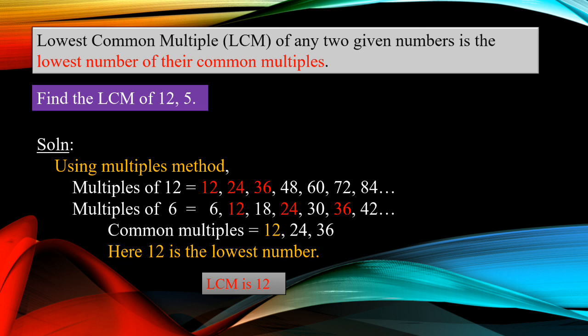Using the multiples method, find LCM of 12 and 6. Multiples of 12: 12, 24, 36, 48, 60, 72, 84. What are the common multiples? 12, 24, 36 — next numbers will also come, but we need only the lowest number. Which is the lowest one? 12. 12 is the lowest number. So your LCM is 12. Your homework: find the LCM of 12 and 6 using the multiples method — find multiples of 12, multiples of 6, common multiples, and then the lowest common multiple.